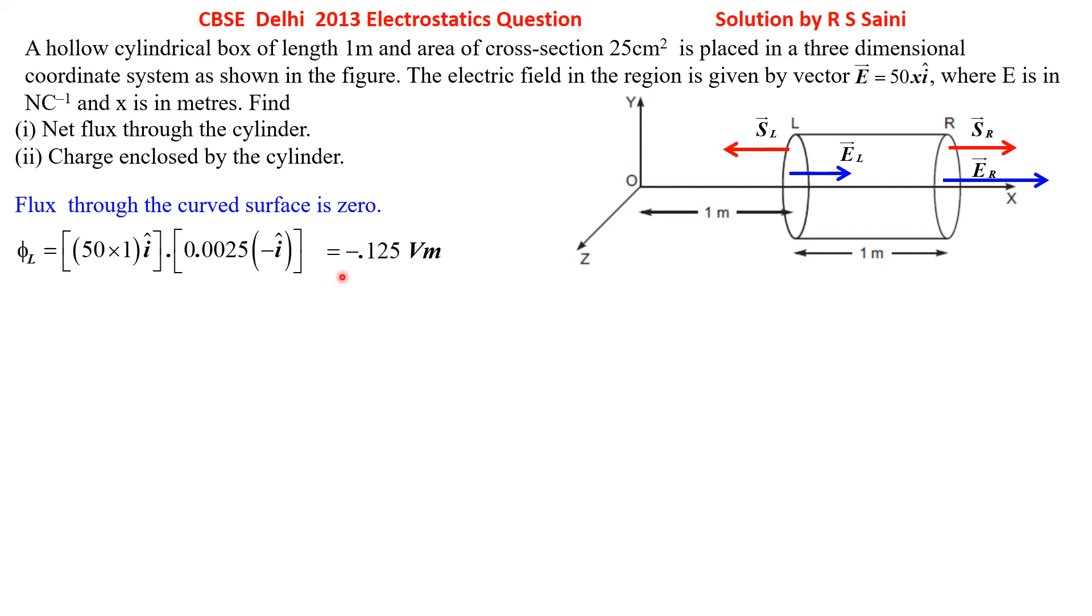Now let us come to right-hand side. On right-hand side, E and area vector both are pointing in the same direction. You may directly write 50 into x-coordinate 1 plus 1 equal to 2 meter, x equal to 2 meter, i-cap. Area vector magnitude is same but direction is along positive x-axis, i-cap. i-cap dot i-cap is 1. Answer would be exactly double of this but there is no negative sign this time.